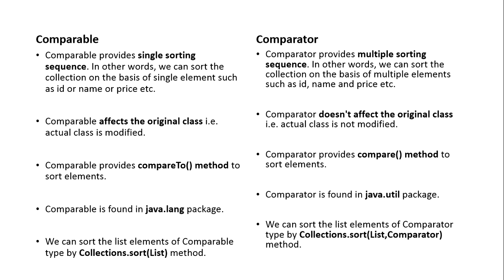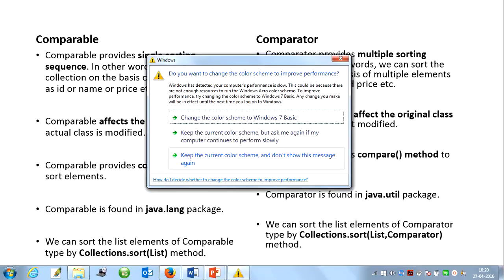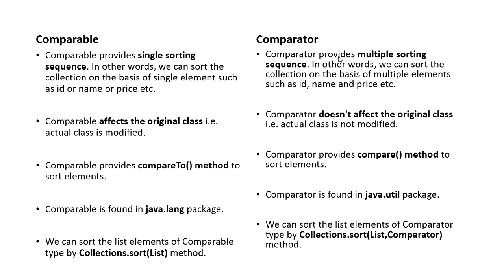When we use Comparable, it affects the original class — you have to modify your actual class by implementing the Comparable interface. In the case of Comparator, it does not affect the original class; the actual class is not modified because we are creating a new class and implementing Comparator in that new class.